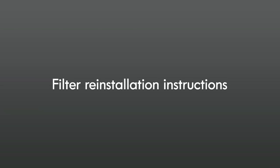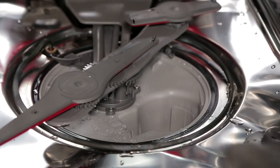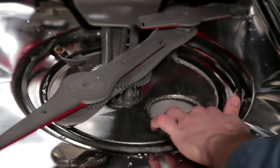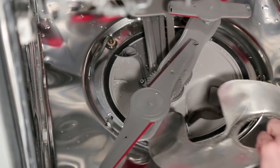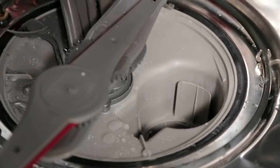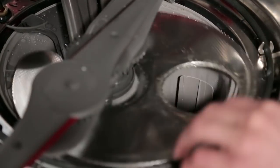Filter reinstallation instructions: place the lower filter under the locating tabs in the bottom of the dishwasher so the round opening for the upper filter assembly lines up with the round opening in the bottom of the tub. Insert the upper filter assembly into the circular opening in the lower filter.